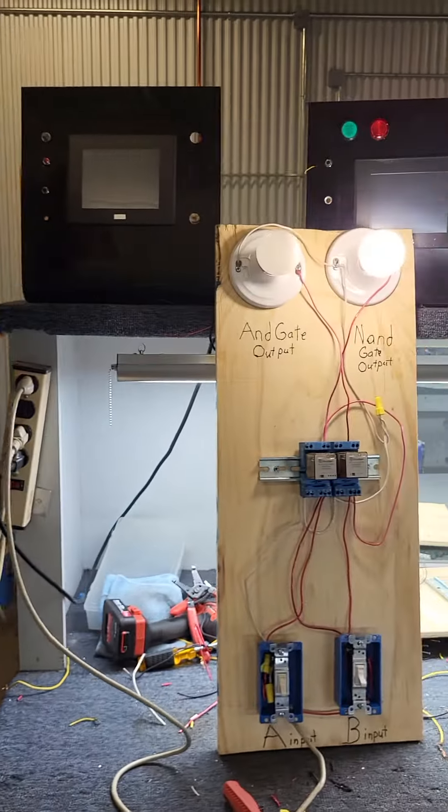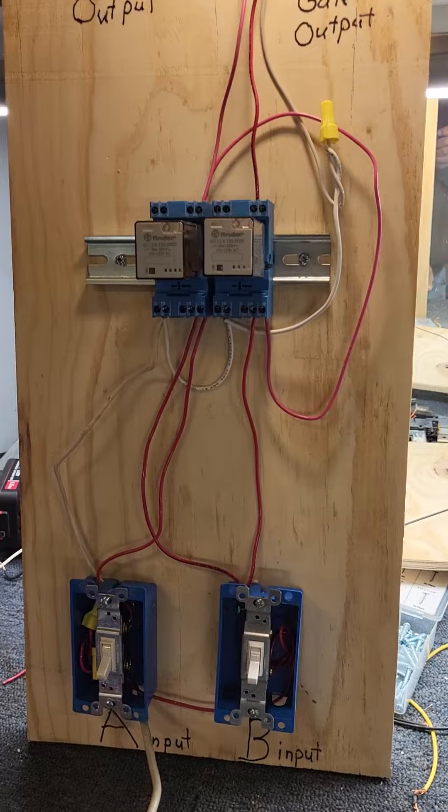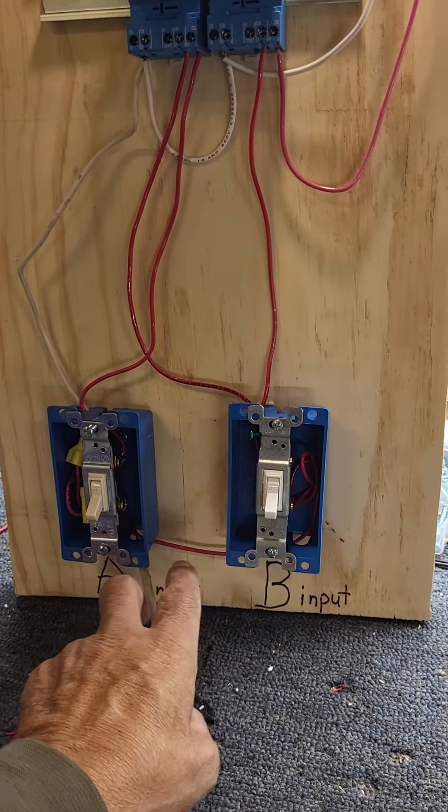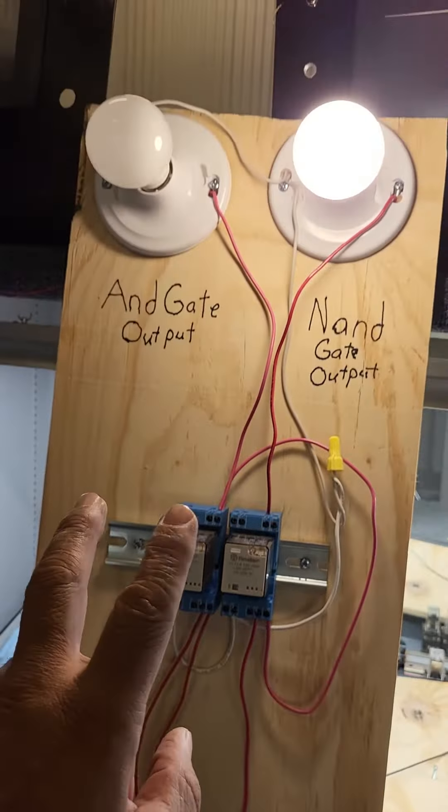Here we got a working model of it. We got our two inputs here, A and B. We got our relays and then we got our outputs.